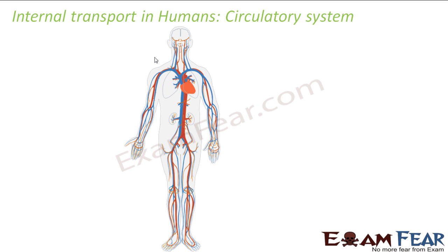Here we will first talk about the internal transport in humans. We are going to talk about humans first because we just finished our discussion on the respiratory system in human beings. So if I start with the transport system in humans, it will be easier for you to understand since the respiratory system is still fresh in your mind. Now the internal transport system in humans is known as the circulatory system.